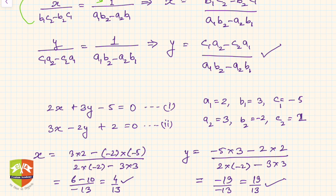So directly by applying the formula we got x = 4/13 and y = 19/13. This method is called the cross multiplication method.